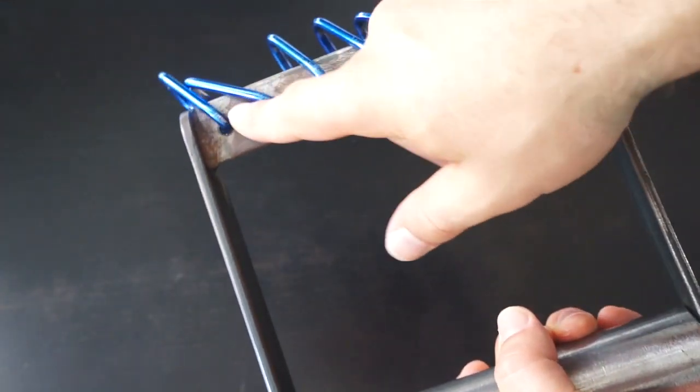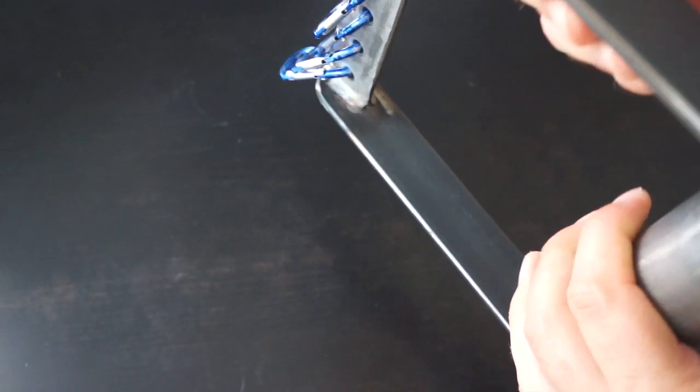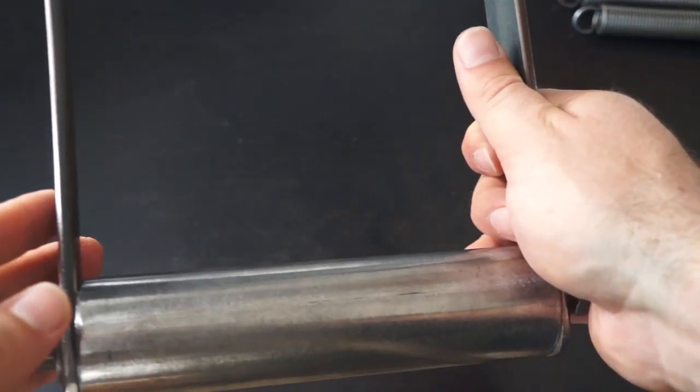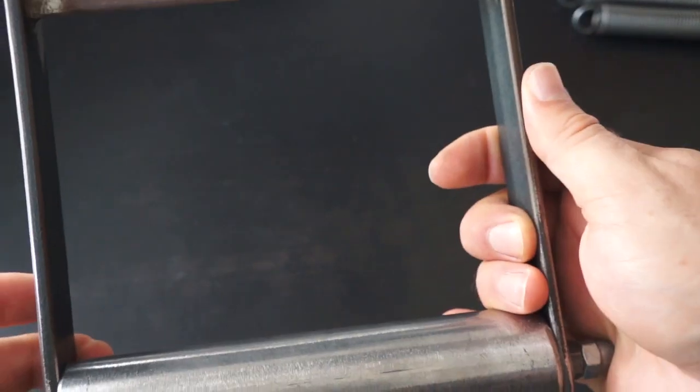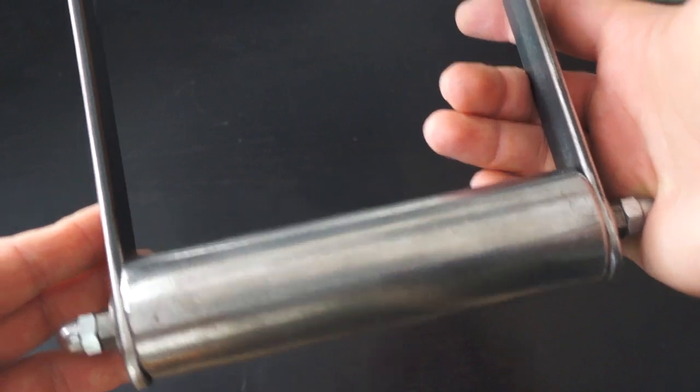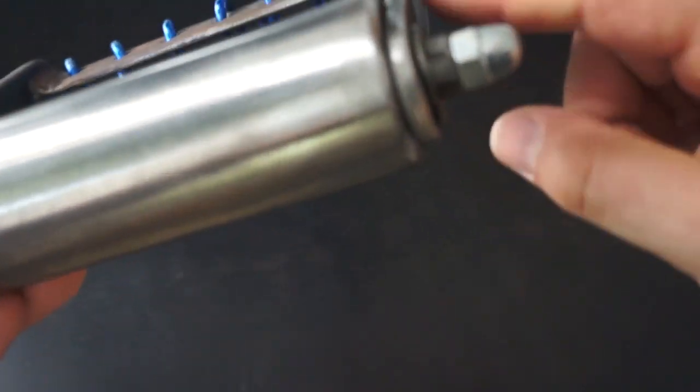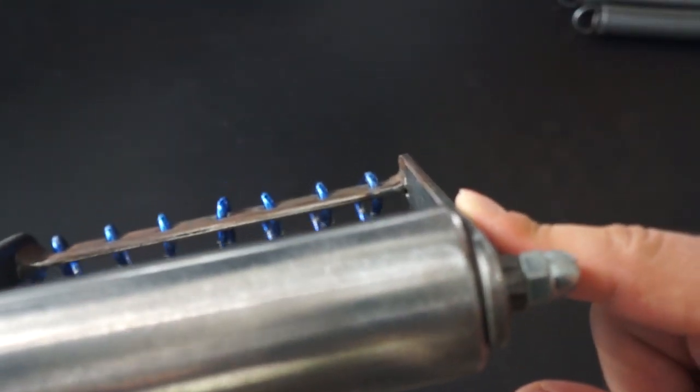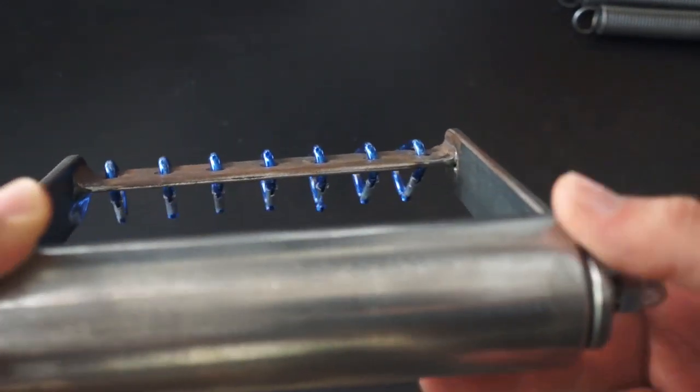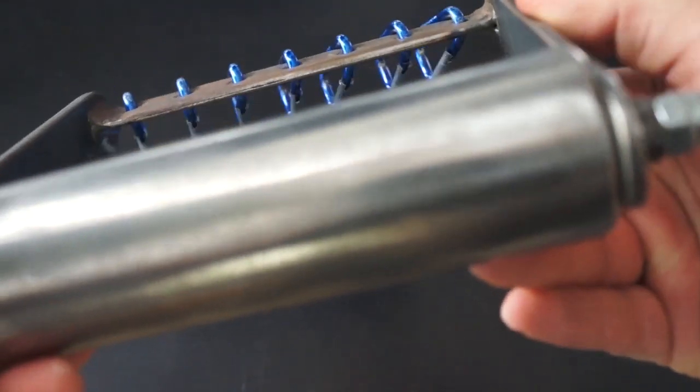It doesn't bother me. If it bothers anyone, you can just treat the whole thing up here with rust protection, however you want. What's important if you want to build such a grip with our templates is that you break the edges. Breaking means the edge is not sharp, so it no longer has a 90-degree angle.